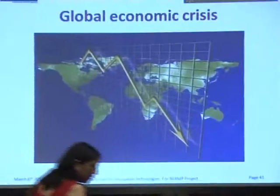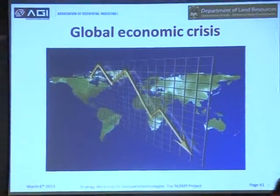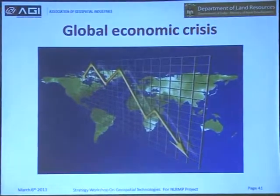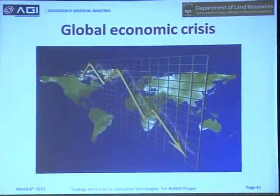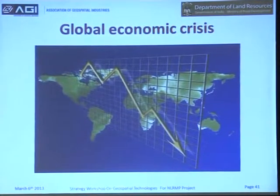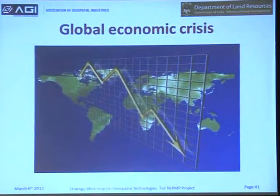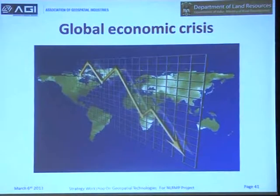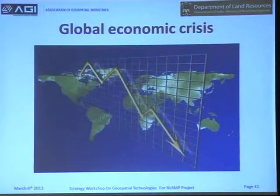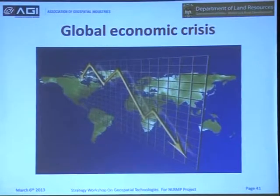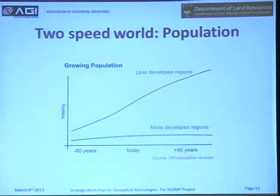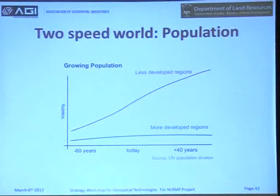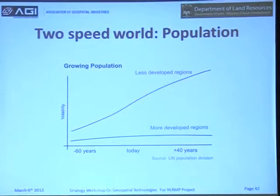The global economic crisis — we have seen this in 2008, and all of us know there is a deep connection between land and the crisis itself. The world went into a spiral in terms of negative growth rates, high debts, and high unemployment rates everywhere across the world. But what has evolved after this?